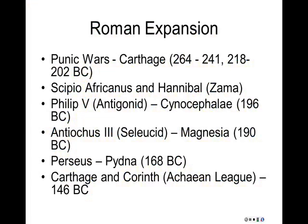Last time we were examining the expansion of Rome, and we saw Rome go from being a city-state in central Italy to expanding to all of Italy, then fighting against the Empire of Carthage in North Africa. By the end of the Second Punic War, which ended in 202 BC, Rome was the dominant power in the Western Mediterranean. Today we're going to finish how Rome went from being a superpower to being the superpower.